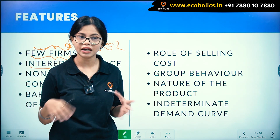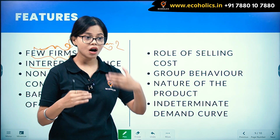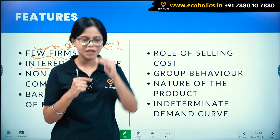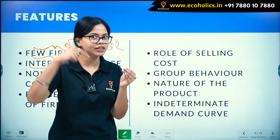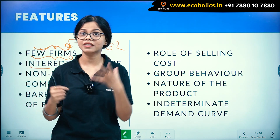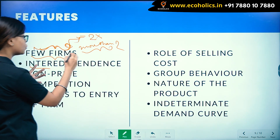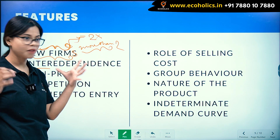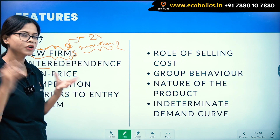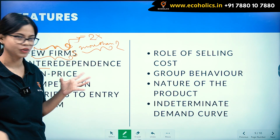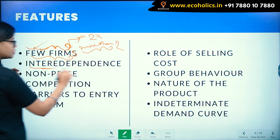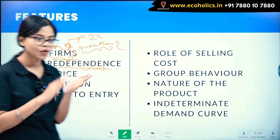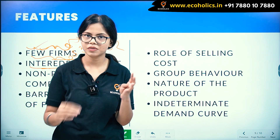They have influence over other firms, so there exists a lot of competition and they keep a close check on what their rival is doing. Because there are few firms, they have a lot of influence amongst each other. So — few firms, interdependence. Interdependence means if one firm is doing something, it will evoke a reaction from other firms also.